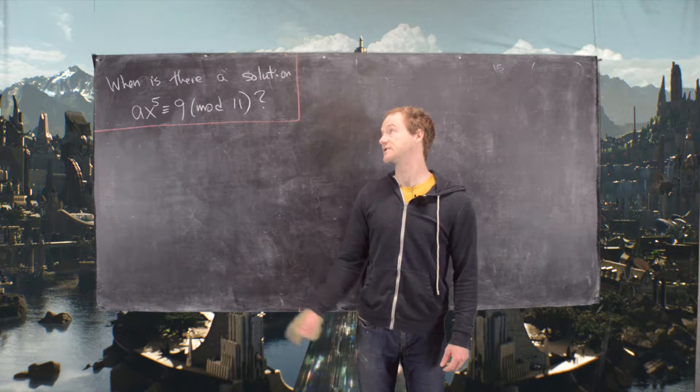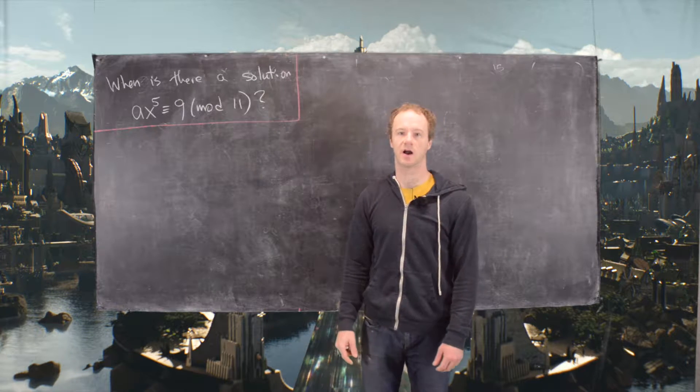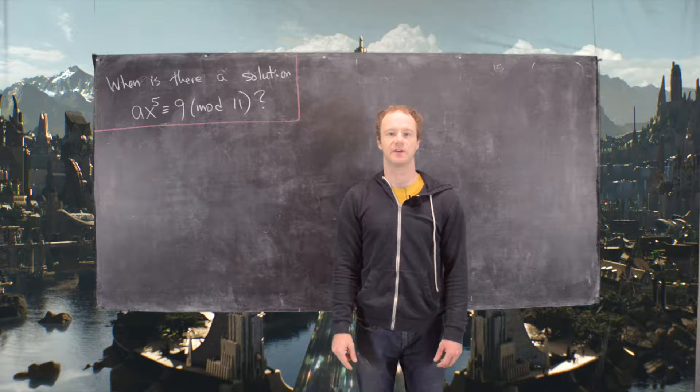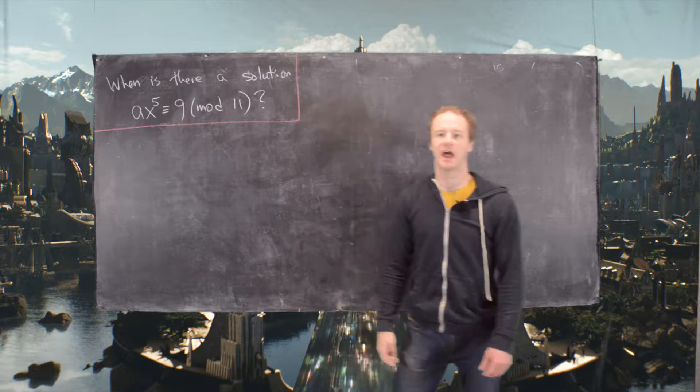In this video we want to look at the solvability of this polynomial congruence. We want to find the values of A for which Ax^5 ≡ 9 (mod 11) has a solution.